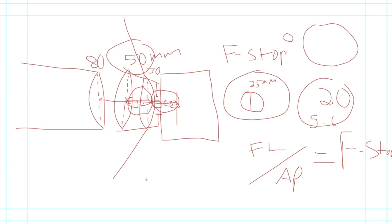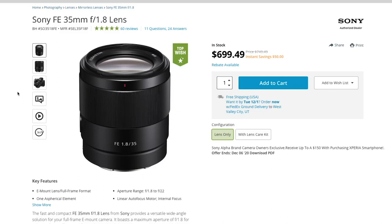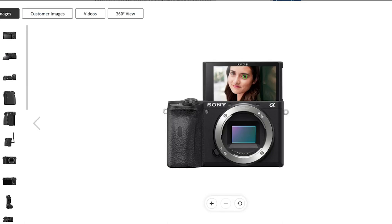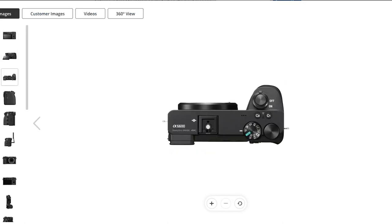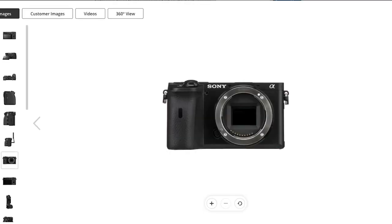When you open up your iris it changes what's called the circle of confusion, but for all intents and purposes just know that when you open your iris more, your depth of field shrinks significantly. When you stop down to a smaller aperture, your depth of field increases. A large aperture gives a very shallow depth of field; a very small aperture puts more in focus and gives a very deep depth of field. The lens you use is very important. I'm using the Sony a6600, which is affordable but has a smaller APS-C image sensor — approximately half the size of a 35mm sensor — which also affects depth of field.